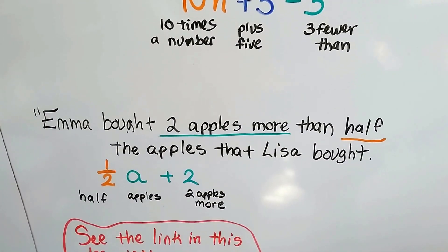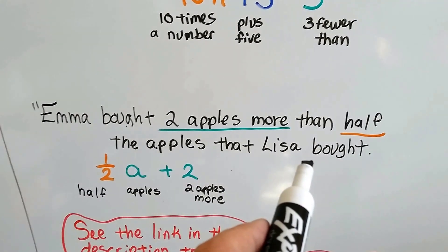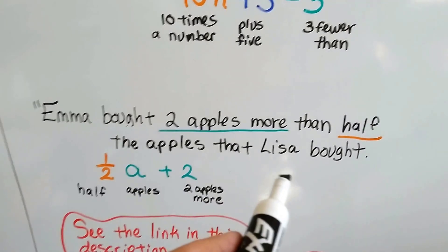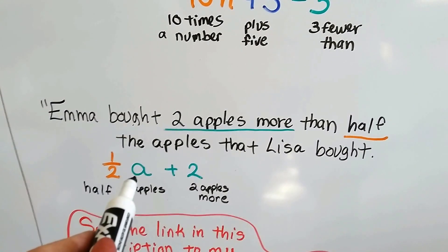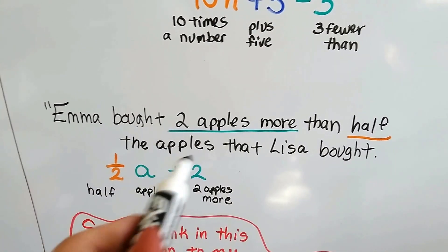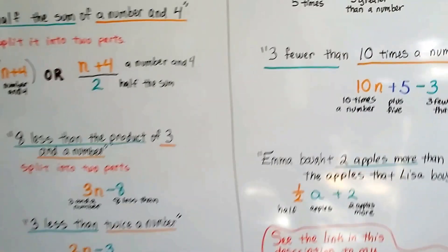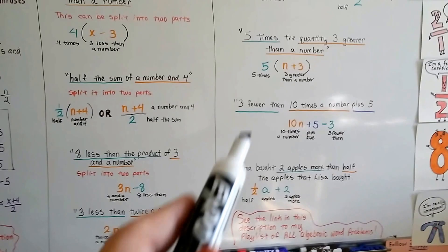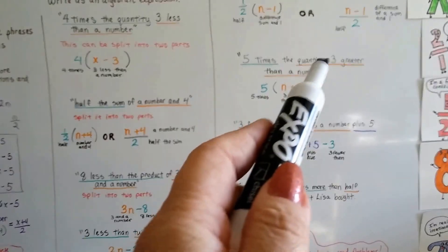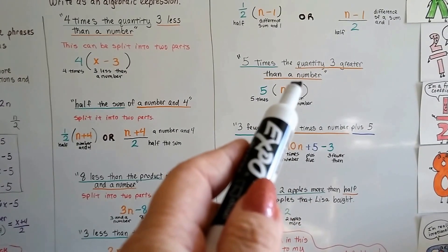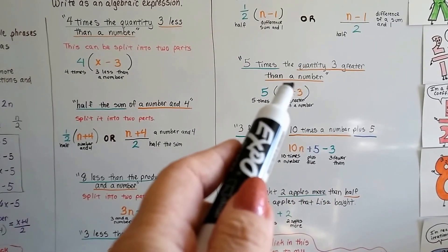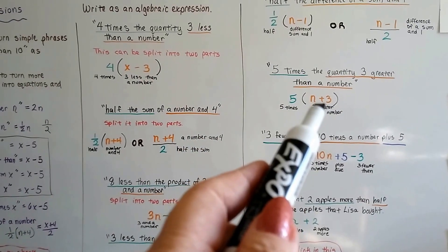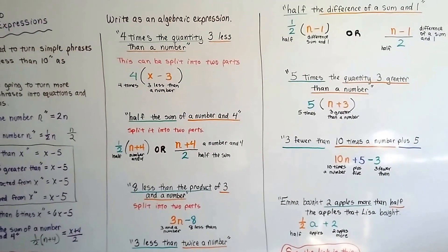So if you're confused, try plugging numbers in. When you see half the apples that Lisa bought, give Lisa a nice round even number that can be split in half easily, like ten or twenty or one hundred. And then come up with a variable like a for apples and try saying two more and see if that works. So sometimes when you're trying to write the expression, it really helps to plug in some real numbers. If you can't figure out five times the quantity three greater than a number, come up with a quantity three greater than a number. The quantity three greater than ten would be thirteen. And then five times that would be five times thirteen. And then that'll help you write the expression.